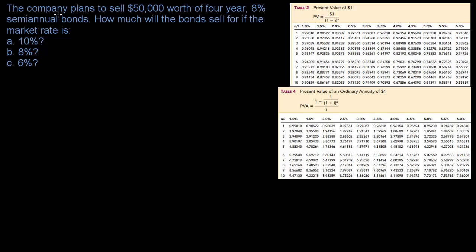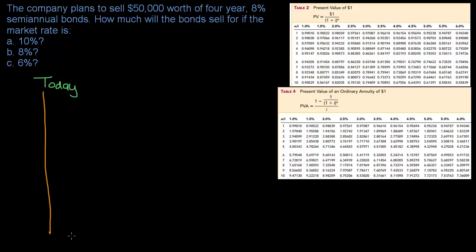The company is going out into the marketplace and saying, 'Hi, we need money today.' And if you give us money today, here's what we're going to do for you. If you give us money today, we are going to give you $50,000 four years from now.